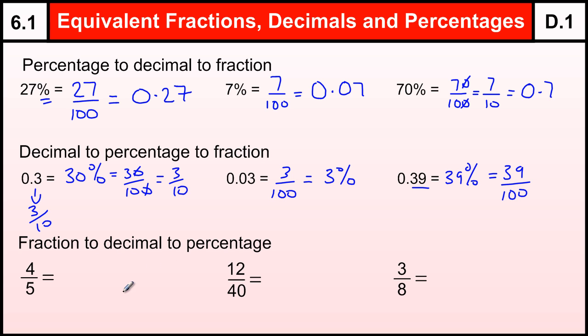Fractions to decimals to percentage. Now, if we've got a fraction that's not out of 100, to change it to a decimal, we just do the top divided by the bottom. Now, that's not always easy to do.